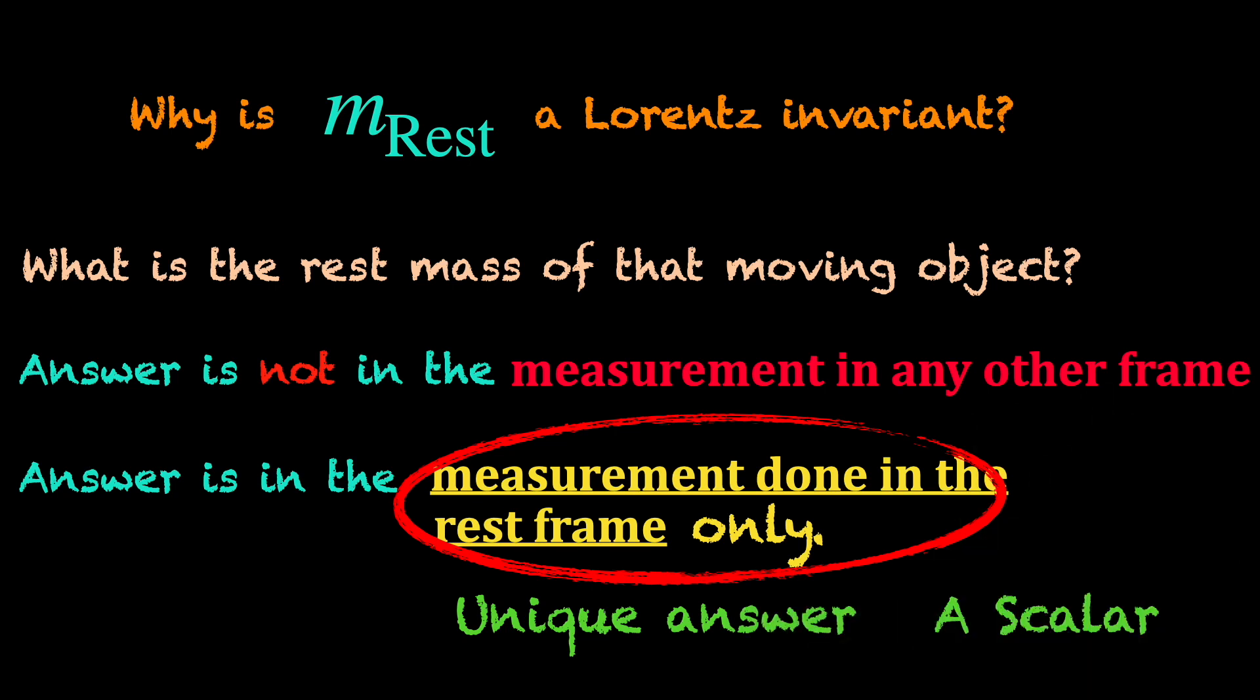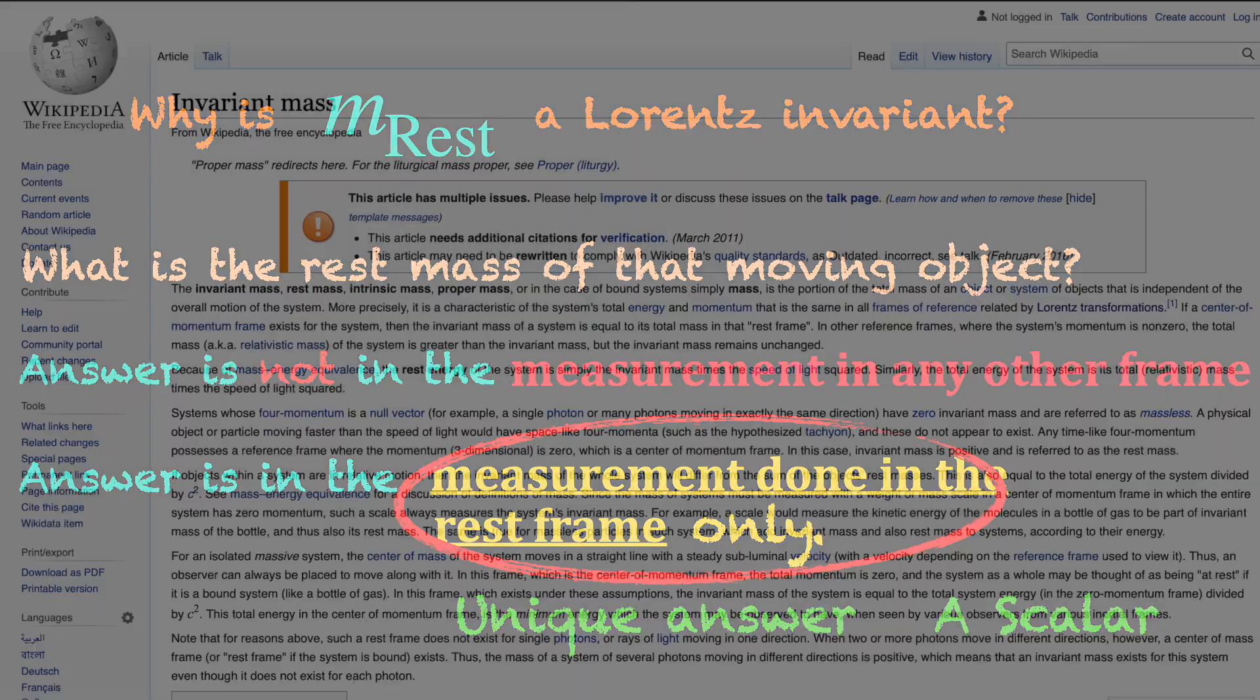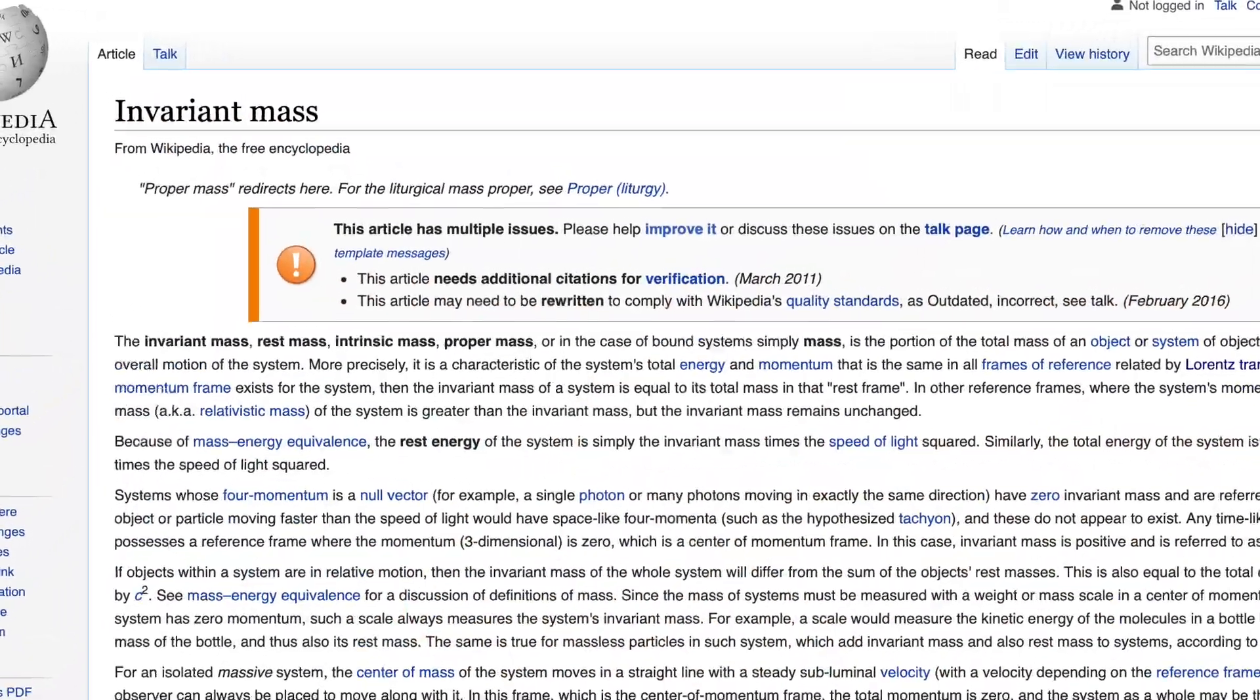So, rest mass is a scalar by default, sometimes also referred to as the invariant mass, for example, in the Wikipedia.